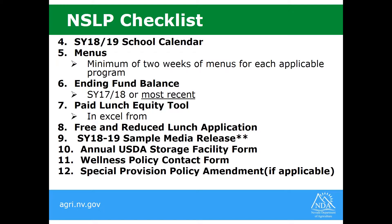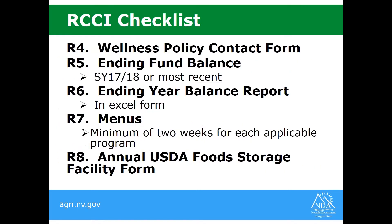Send your free and reduced lunch application — the USDA prototype has not changed from last year, so you can still use that same prototype, just update the dates. We are also requesting your sample media release, but note that USDA has not yet released the income eligibility chart to include in it, so you may send the remainder of your documents in while we all wait for that chart. Also send the annual USDA storage facility form, which monitors where you store USDA foods — we are not looking for a form for each site, just the main sites that house those USDA foods. You also send in your wellness policy contact form and the special provision policy amendment if you are participating in those special provisions.